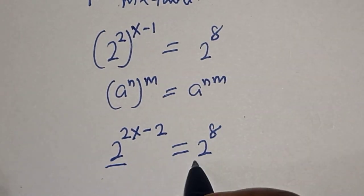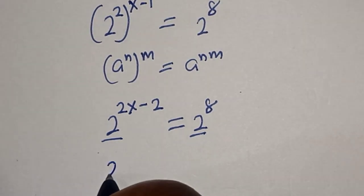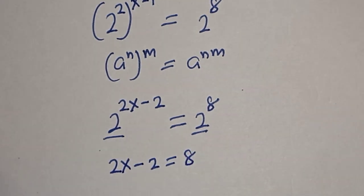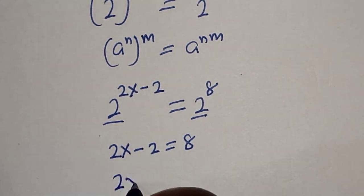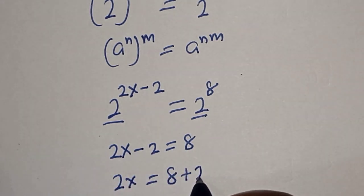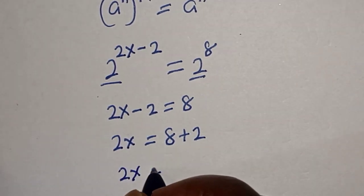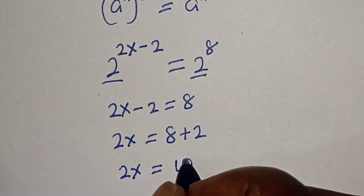They have the same base 2, so we have 2x minus 2 is equal to 8. Then 2x is equal to 8 plus 2.